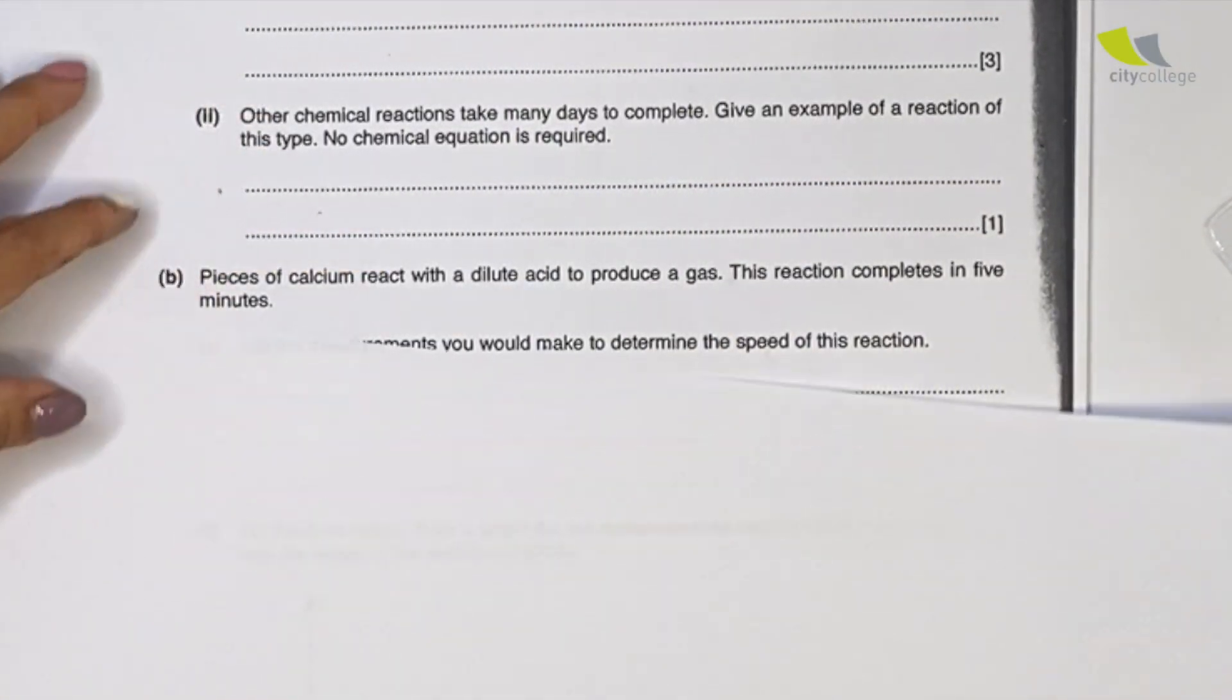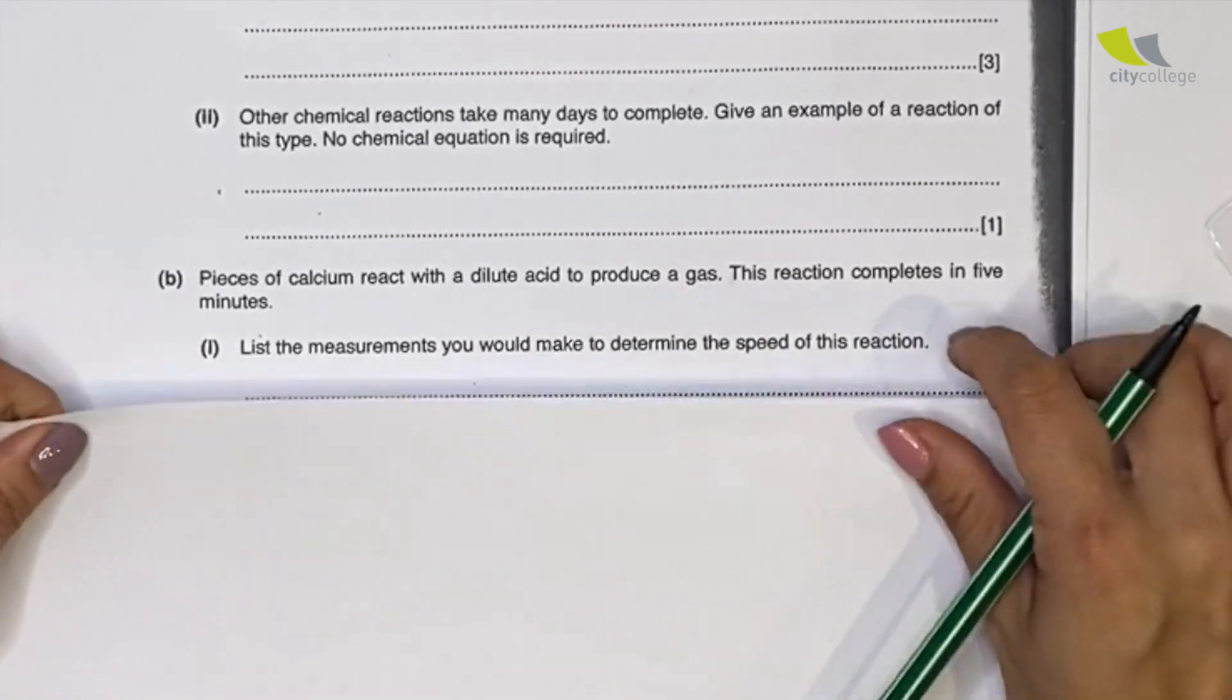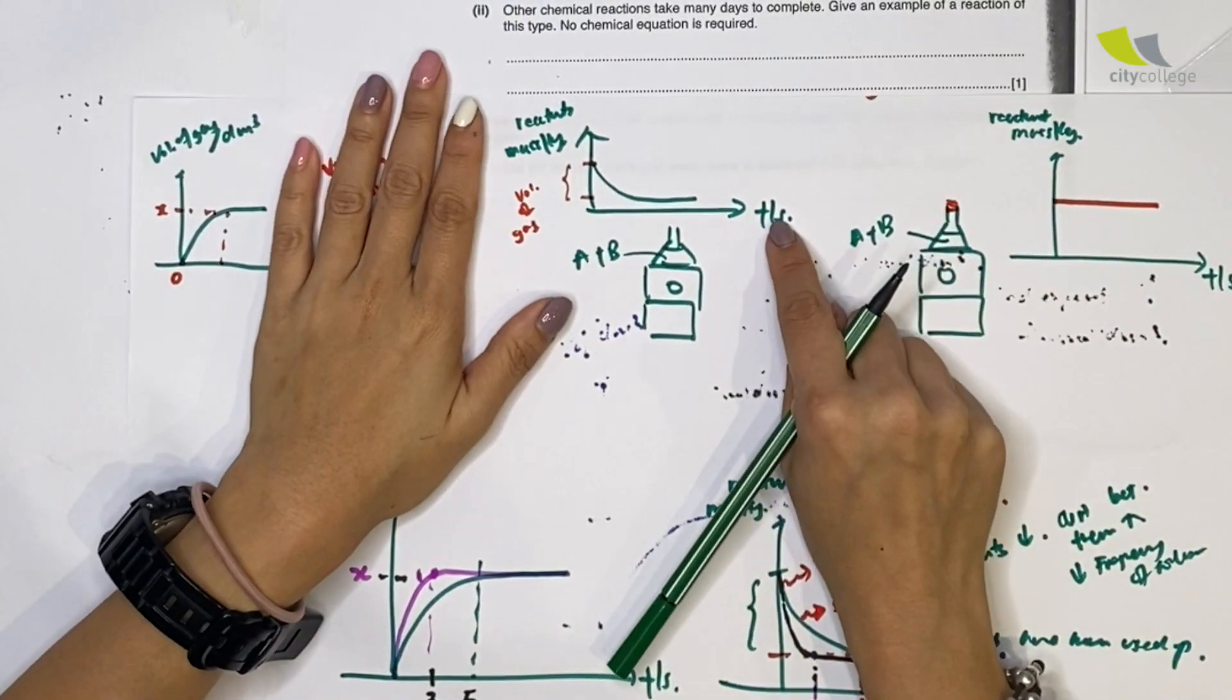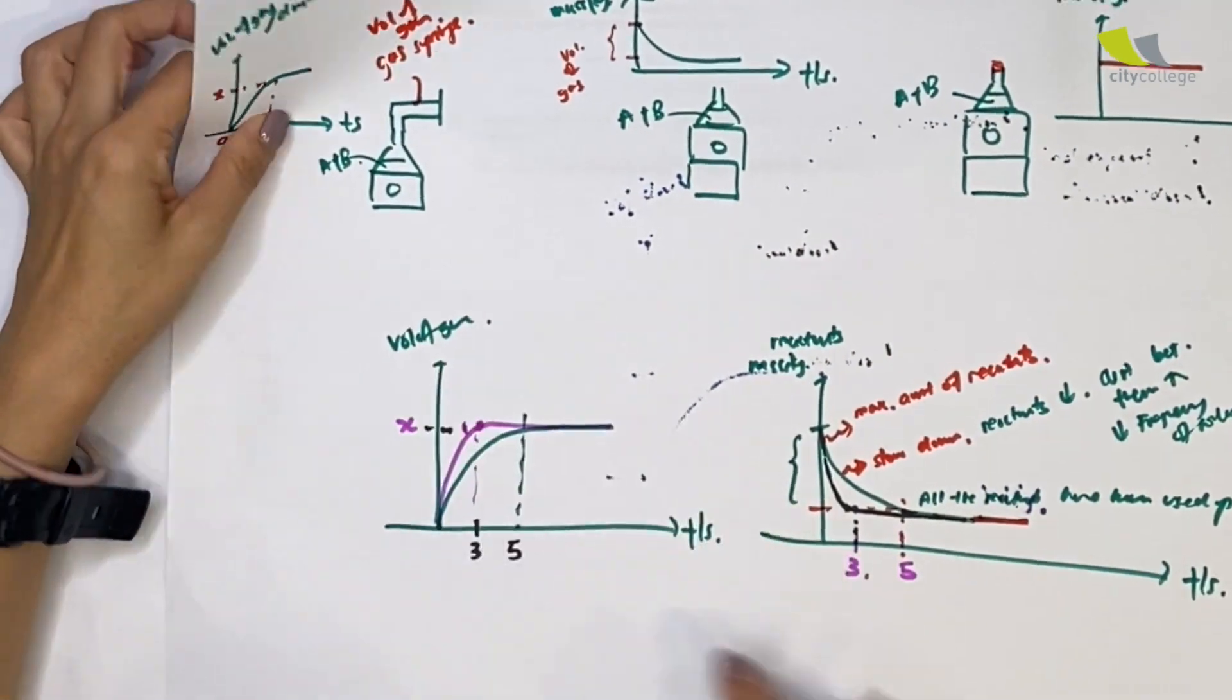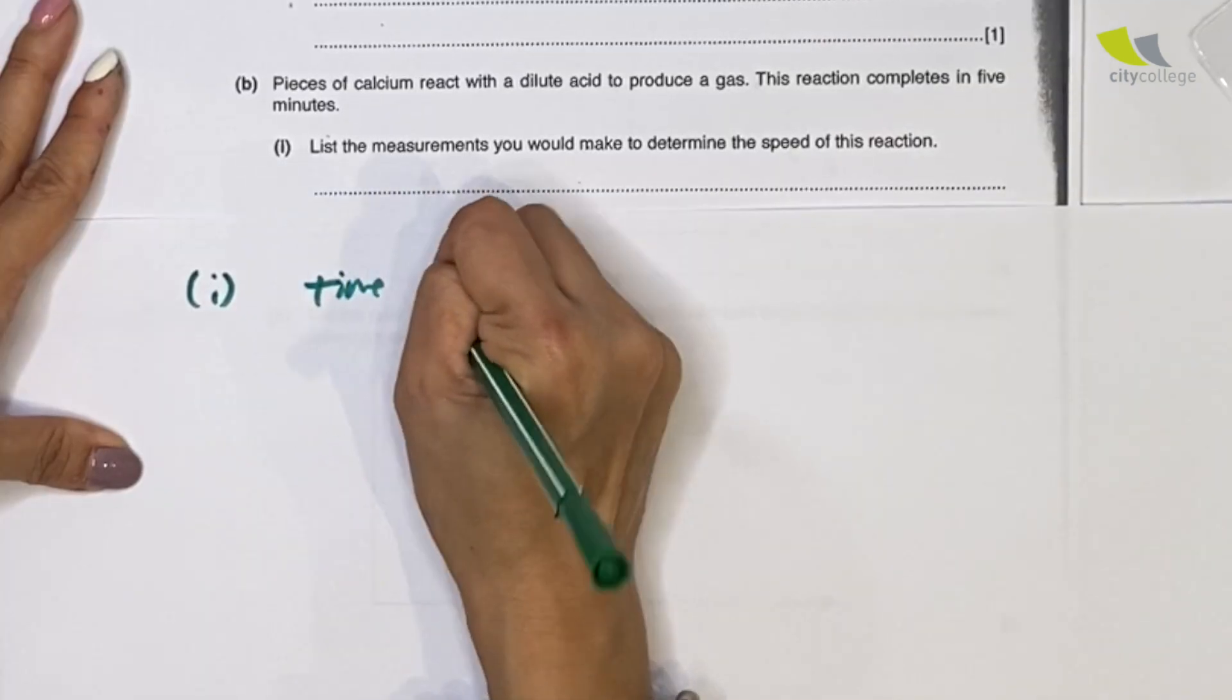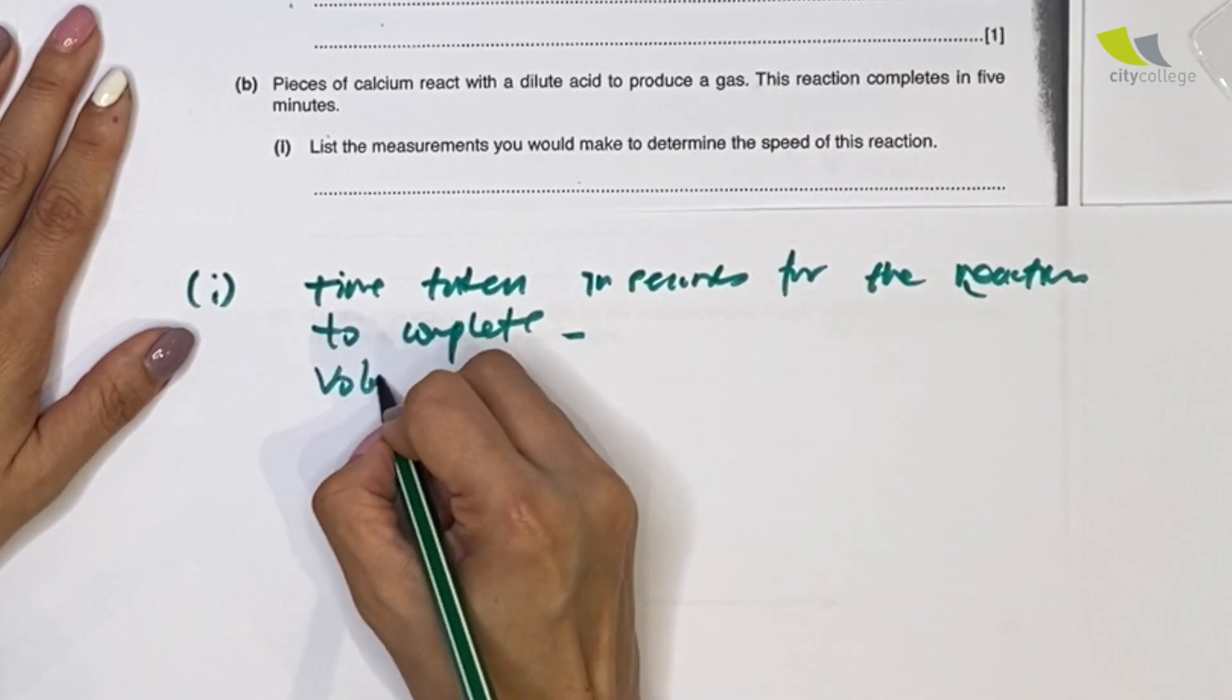Next, they have over here this portion. They say pieces of calcium react with dilute acid to produce a gas. The reaction completes in five minutes. List the measurements to determine the speed. Same thing - in order to determine the speed, we need to either measure the time and the mass of the reactants, how they decrease, or the time and the volume of gas evolved. So over here they say a gas has evolved, so the list of things to measure: I will say time taken in seconds for the reaction to complete; second, the volume of gas evolved should be collected.